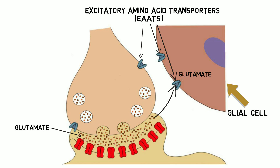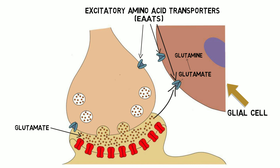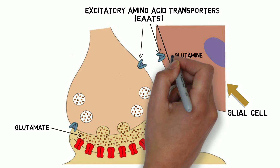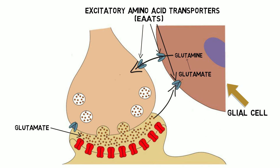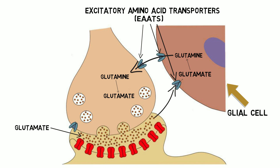Glutamate taken into glial cells is converted to the amino acid glutamine by the enzyme glutamine synthetase. Glutamine is then transported back into neurons, where it is converted back to glutamate. This process is referred to as the glutamate-glutamine cycle.